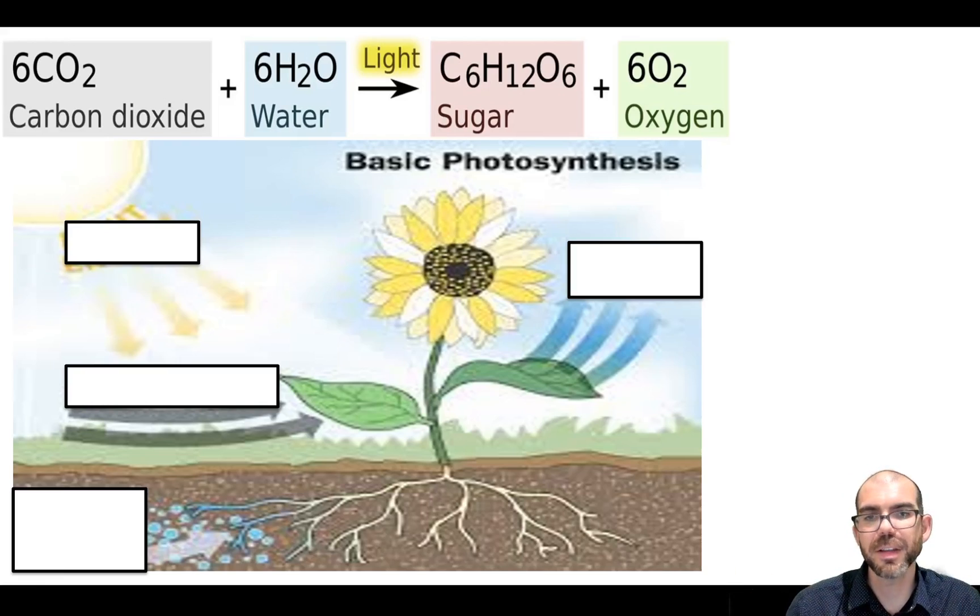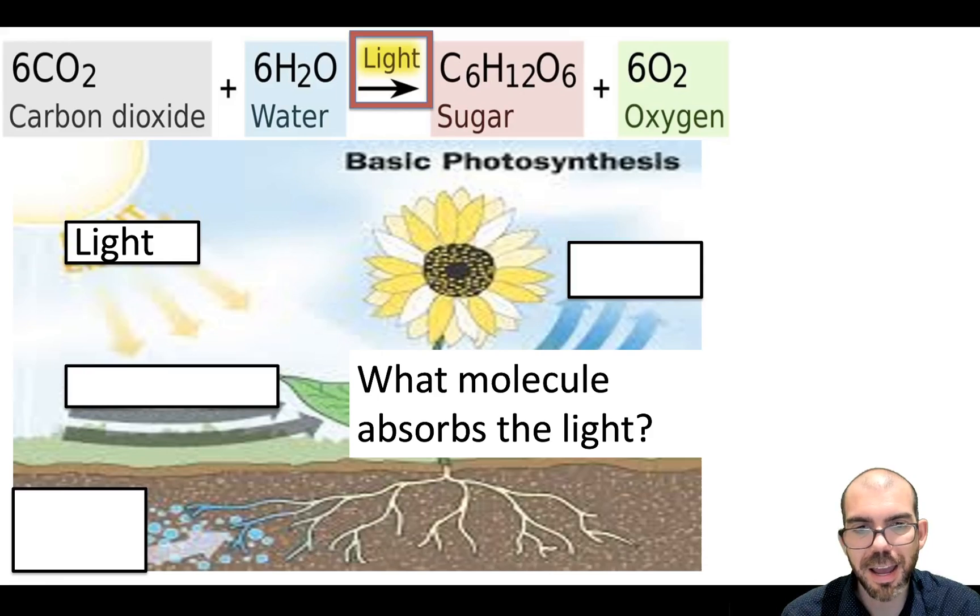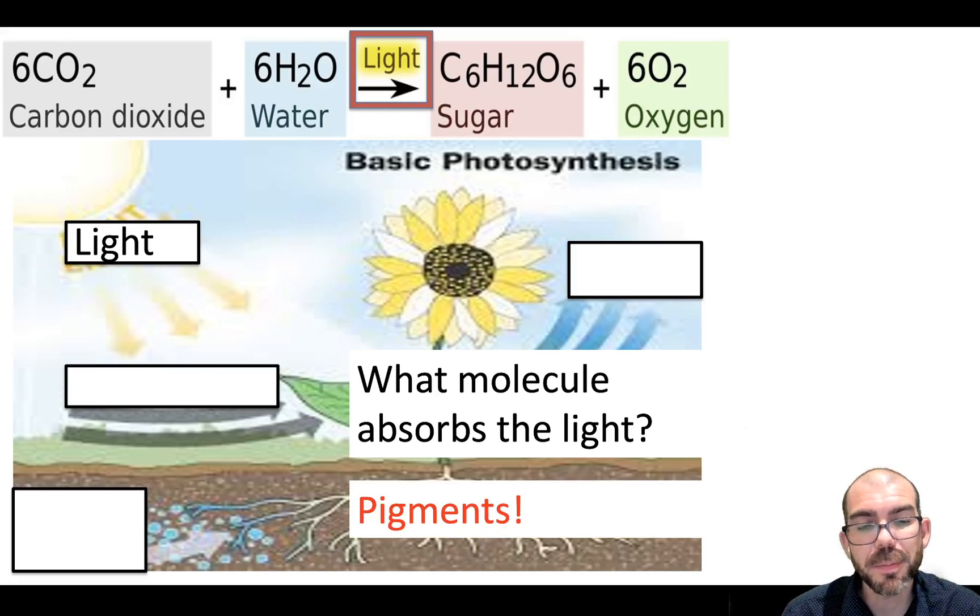So let's just review where everything's coming in and out of a plant. For light, that's going to be shining on and hitting the leaf. But what molecule specifically is absorbing that light energy? Pigments. You'll have pigments like chlorophyll A or chlorophyll B. You can have carotenoids that are a huge variety of pigments.